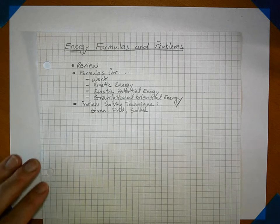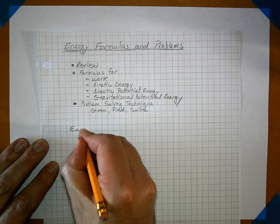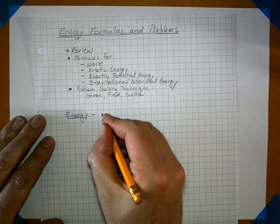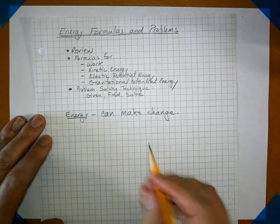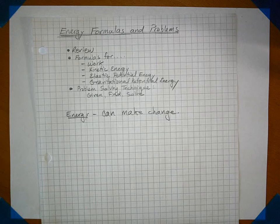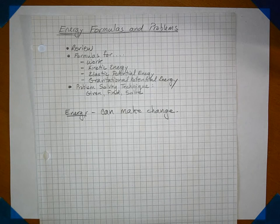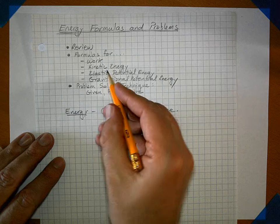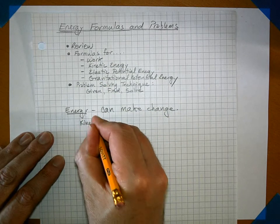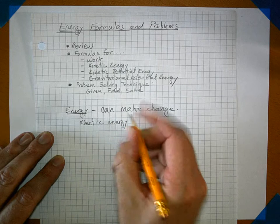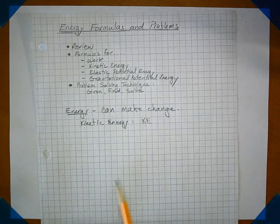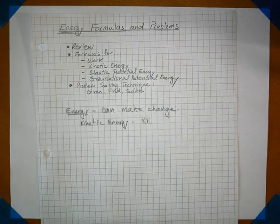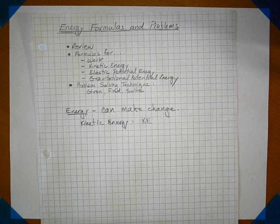Remember what we said about energy: if you've got energy, you can make change — not quarters, nickels, and dimes, but changing something in the environment. Energy gives you that capacity to make change. There are various ways things can have energy. We talked about kinetic energy, which we'll abbreviate as KE. Kinetic energy is when something is moving and has a lot of mass — it can make changes to things it collides with.